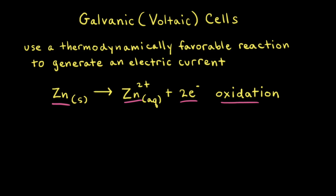As a quick review, the other way to tell that this is the oxidation half reaction is we go from an oxidation number for solid zinc of zero to an oxidation number for zinc two plus of plus two. An increase in the oxidation number is oxidation.